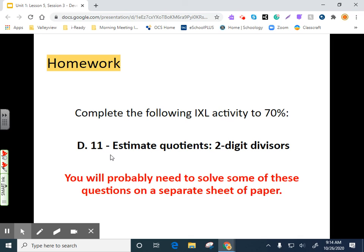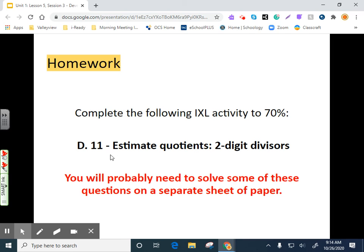And so your homework today is D11 estimate quotients with two-digit divisors. As with most of these IXL, you probably will need to solve a few on a piece of paper. So have one handy or use your actual workbook to write these things down so you keep everything in the same place. You go to 70% for full credit, 80 and 100 for extra credit for Classcraft.